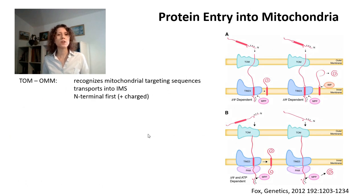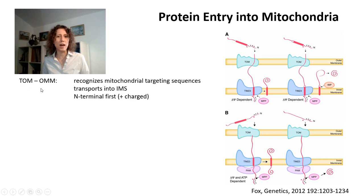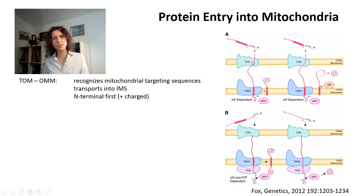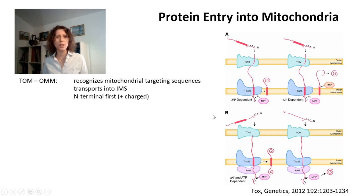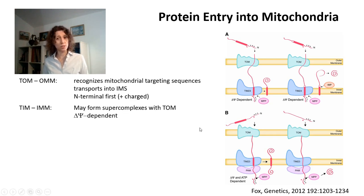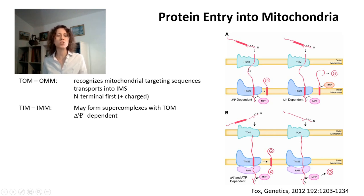Importing proteins into mitochondria requires transporters — the TIM and TOM system. TOM stands for the transporter of the outer mitochondrial membrane. It recognizes proteins that have a target sequence directing them towards mitochondria, and transports these proteins into the intermembrane space, N-terminal with its positive charge first. The rest of the transport happens through TIM, the transporter of the inner membrane. TIM and TOM are structurally related, forming a super complex, and can be found at contact sites between the inner and outer mitochondrial membranes.